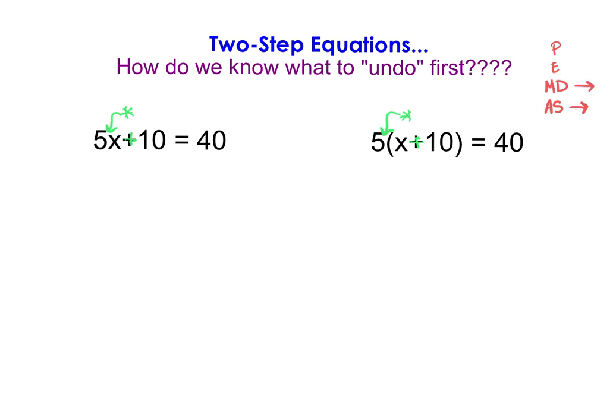When looking at what to undo first, we need to think about the order of operations happening on the side with x. We're going to ignore the 40 for now and focus on just the left-hand side of each equation. The easiest way to solve an equation if you don't know what to do is write out the order of operations and undo it backwards in reverse.